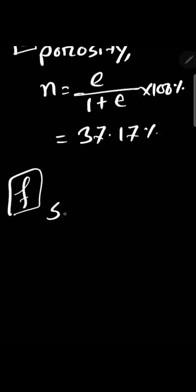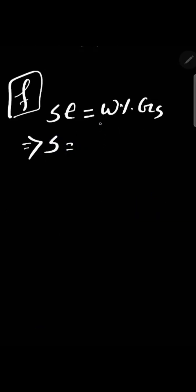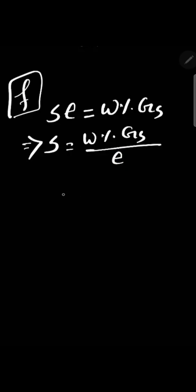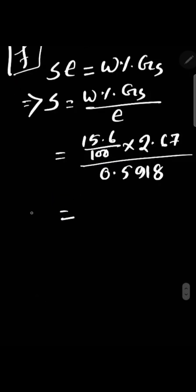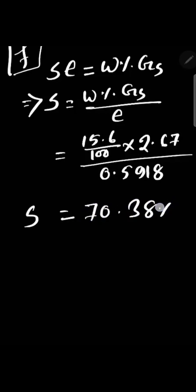The final question is to calculate the degree of saturation. S times e equals moisture content times specific gravity. Degree of saturation equals moisture content times specific gravity divided by void ratio, and the degree of saturation will be 70.38%.